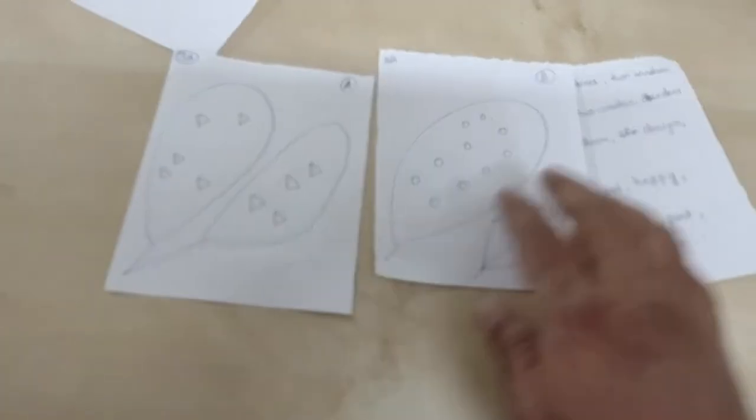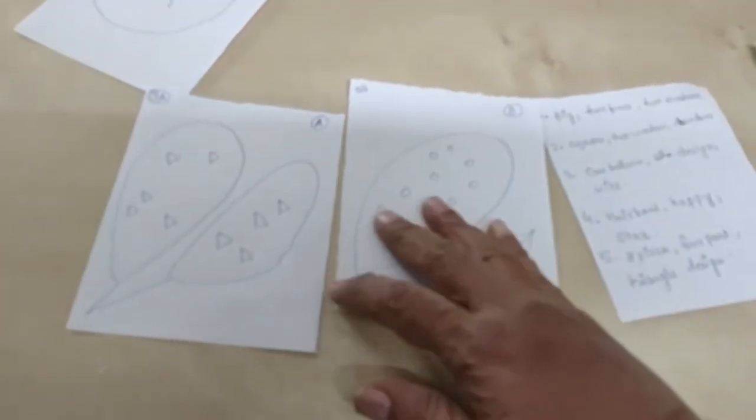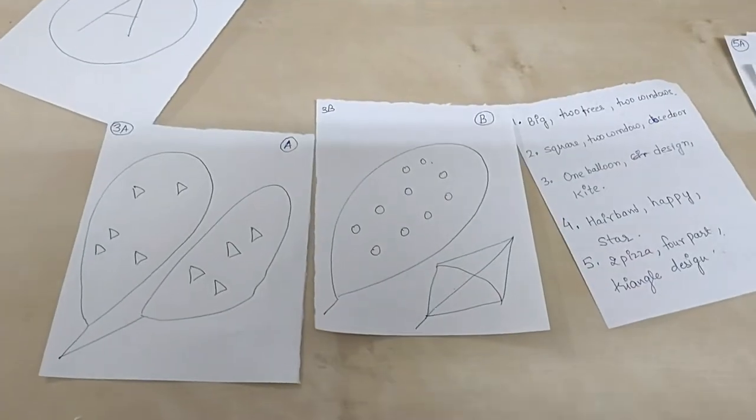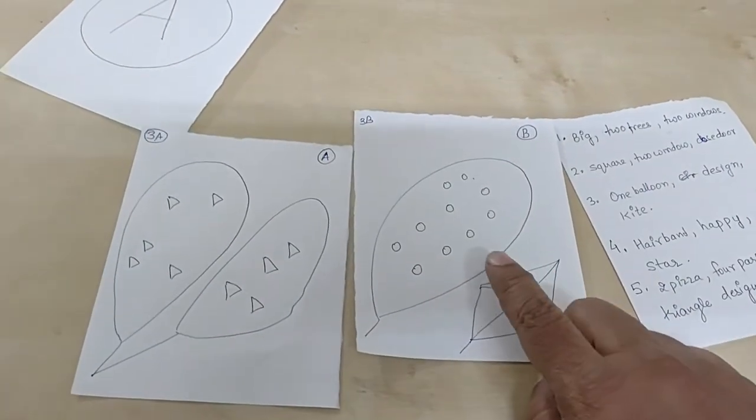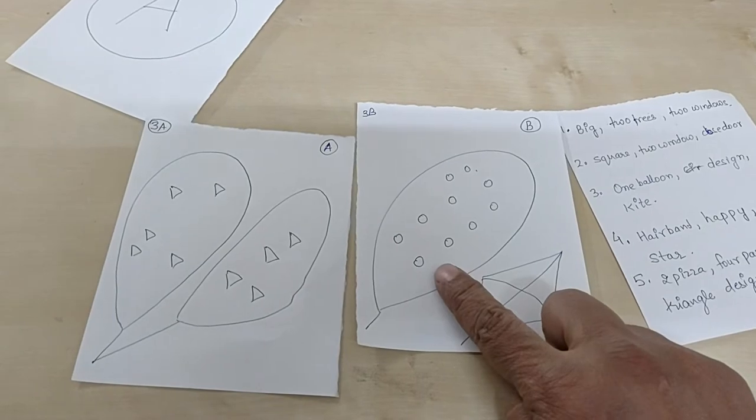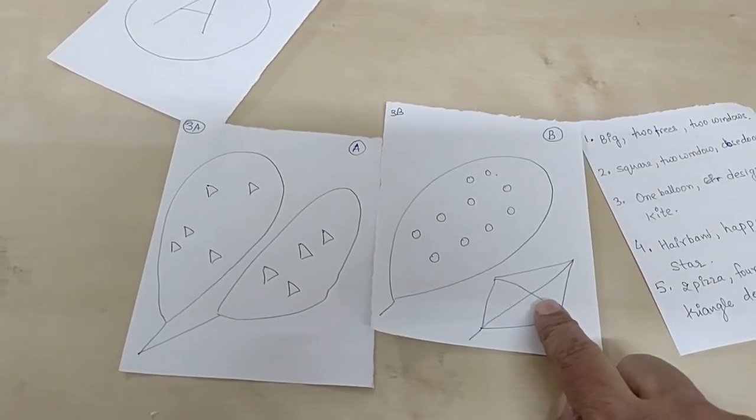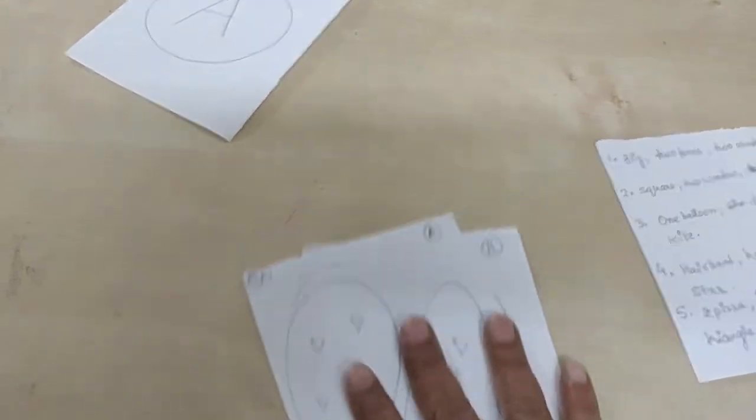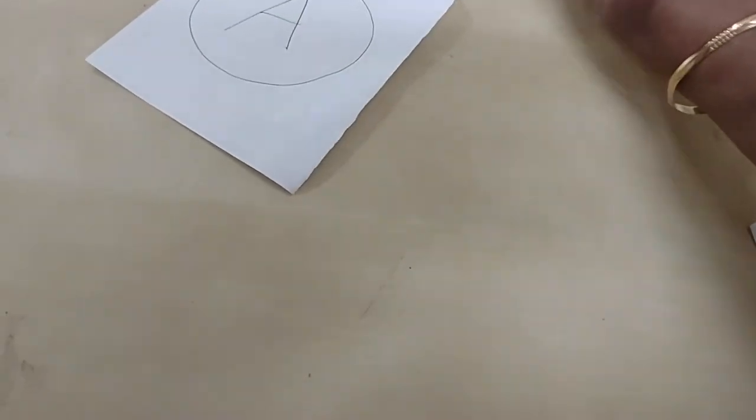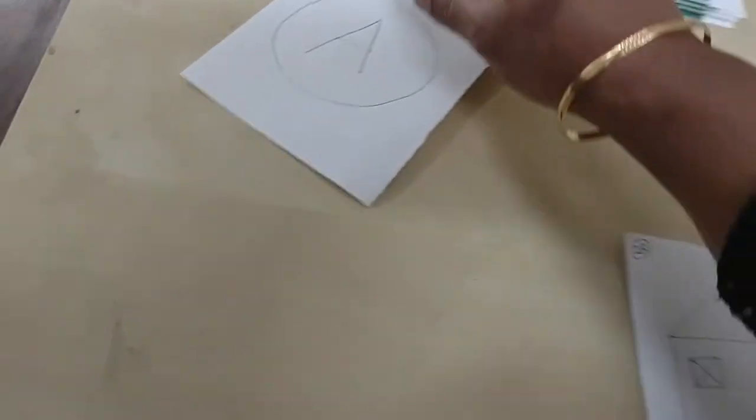And then the parent will respond for this one, then the child gets the opportunity to respond in the next set. Here the child will say B picture has only one balloon, B picture balloon has design of a circle, B picture has a kite.